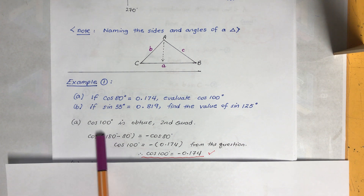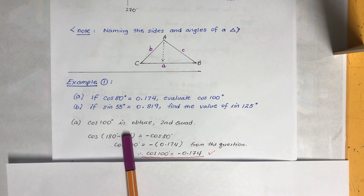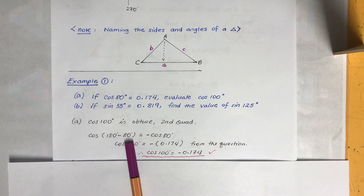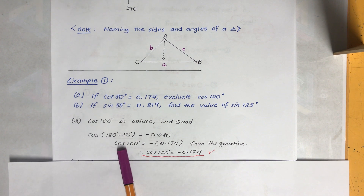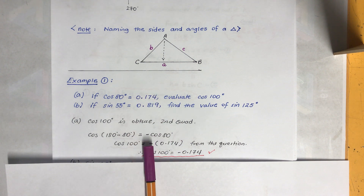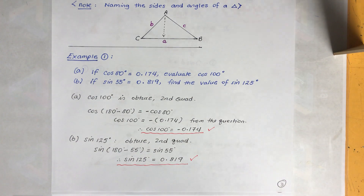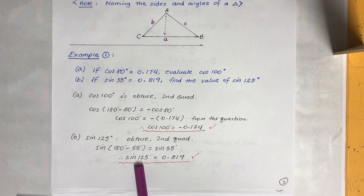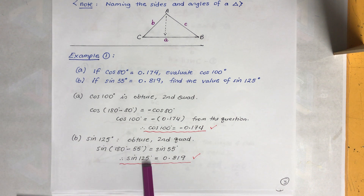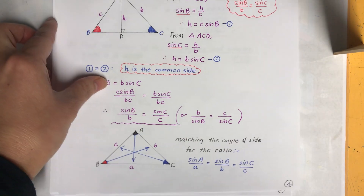For cos 100°: it's obtuse in the second quadrant. Using the formula cos(180° − θ) = −cos θ, we find 180° − 100° = 80°, so cos 100° = −cos 80° = −0.174. For sin 125°: in the second quadrant, sine is positive. 180° − 125° = 55°, so sin 125° = sin 55° = 0.819.